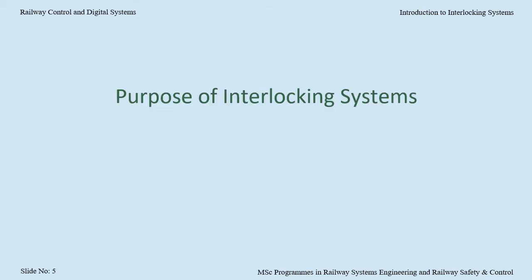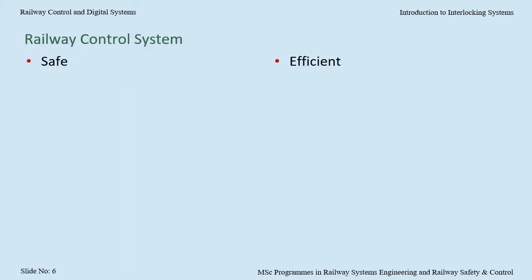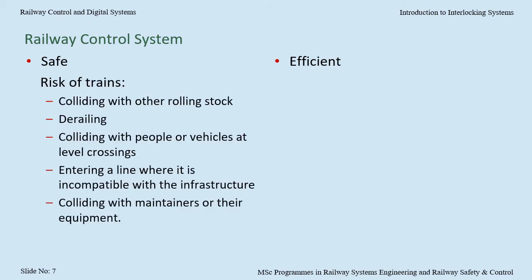The purpose of a railway control system is to ensure the safe and efficient movement of trains. Looking at the safety part, a railway control system mitigates the risk of trains colliding with other rolling stock, derailing, colliding with people or vehicles at level crossings, entering a line where it is incompatible with the infrastructure, or colliding with maintainers or their equipment.